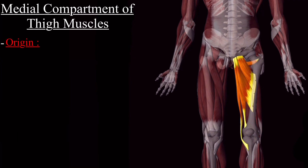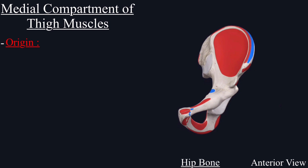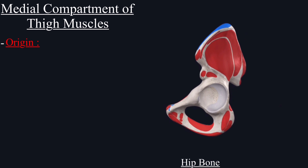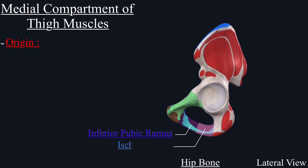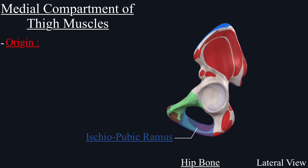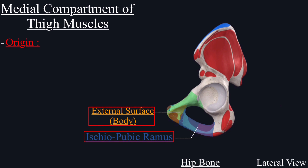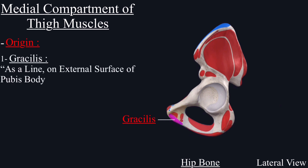First we will discuss the origin. This is the hip bone with the anterior view. In the lateral view, the highlighted green is the pubic part. Inferiorly, this is the pubic ramus, which is continuous with the ischial ramus, and together these two are called the ischiopubic ramus. This is the body of the pubis and this is the external surface of the pubis body. The ischiopubic ramus and the external surface of the body of the pubis is the place where most of these muscles originate. The gracilis muscle originates as a line on the external surface of the body of the pubis and the ischiopubic ramus.